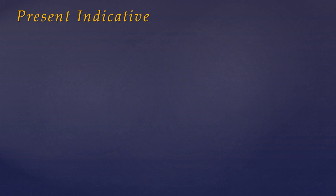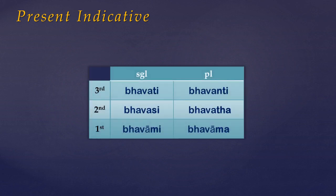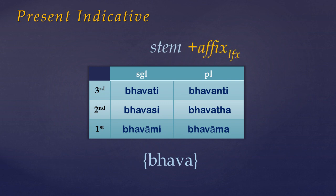And when studying an inflection, it's common to present a paradigm table. For any given verb, we can list the forms it takes in the present indicative, by both person and number. Now it's quite easy to see from this table that all these forms share a common element, and that is bhava. Bhava is the present indicative stem of the verb meaning to be, and is itself derived from a more basic verb root, √bhū.